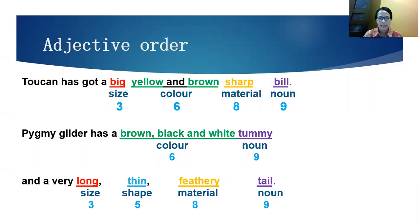Now, let's check one by one. Toucan has got a big. So, you will have to order correctly. So, talking about size, it's number three. So, a big first. Second one, talking about color. A big yellow and brown. If it has more than one, you combine it. Next, go to material number eight. Sharp. And the last one, like I said, the noun that is being described will be at the end. So, Toucan has got a big yellow and brown color, sharp, bill. So, Toucan has a bill that is big, yellow, and brown, sharp, and sharp.